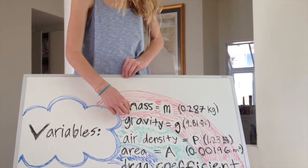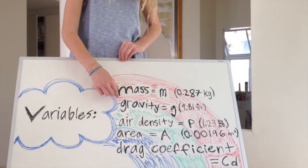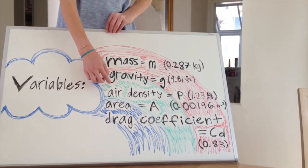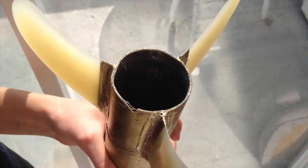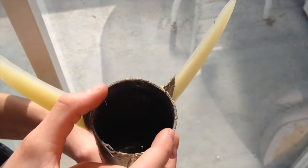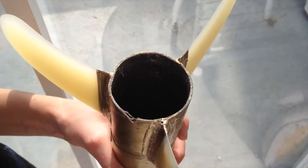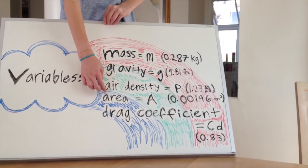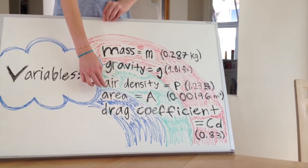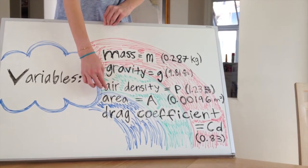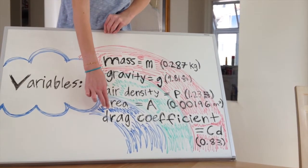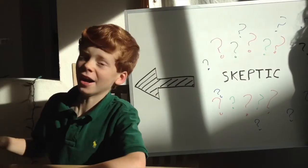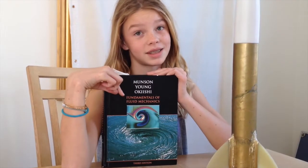This is gravity: 9.81 meters per second squared. This is air density, which is P — 1.23 kilograms per meter cubed. This is our U1 rocket; the cross-sectional area is 0.00196 meters squared. This is area, which is A — 0.00196 meters squared. This is drag coefficient, which is CD — it is 0.83. But how do you know? Because this book said so.